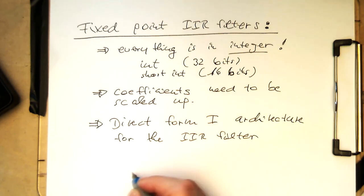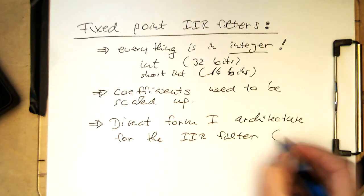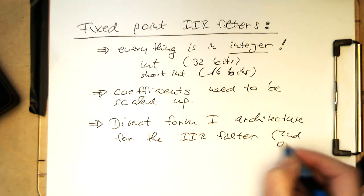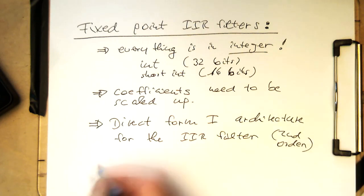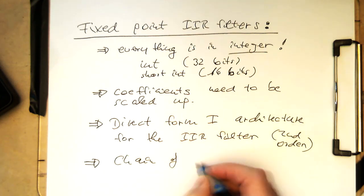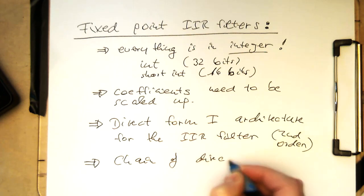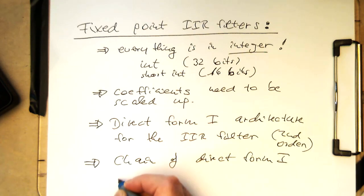Or more precisely, we do a chain of these direct form one architectures. Direct form is second order, and so we are creating a chain of direct form one filters.